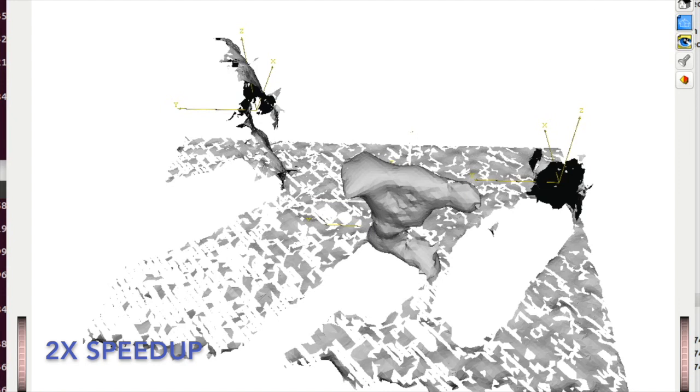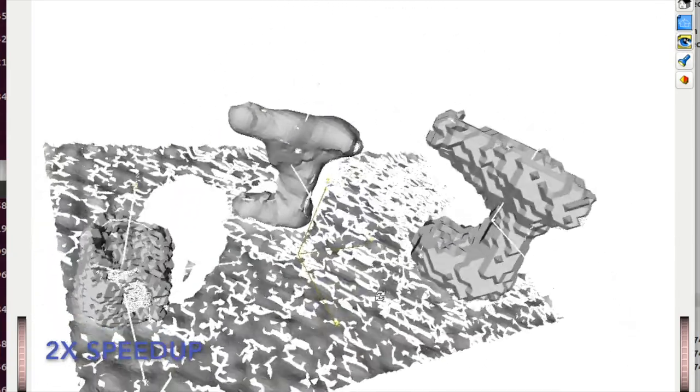Notice the non-target objects have been completed without being post-processed. This way they can be avoided during planning, but additional time is not wasted on them as they are not going to be grasped.